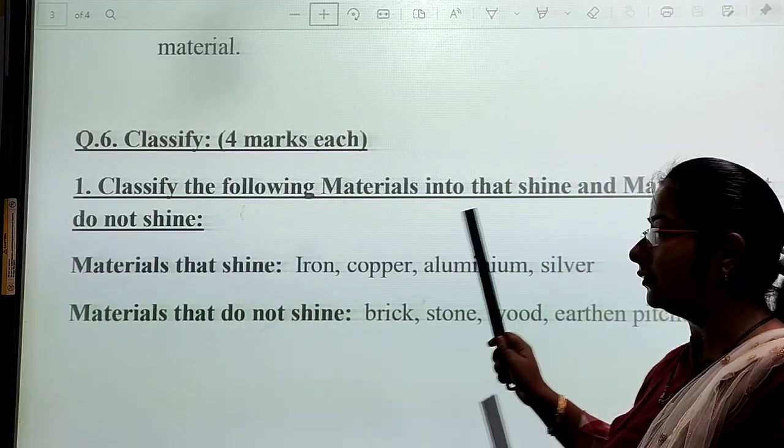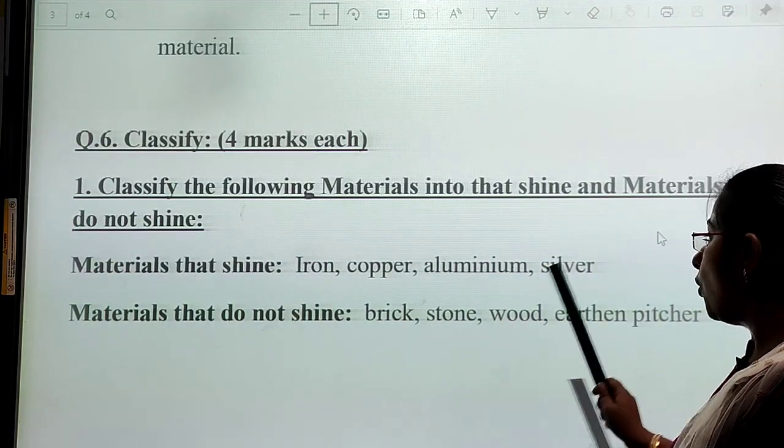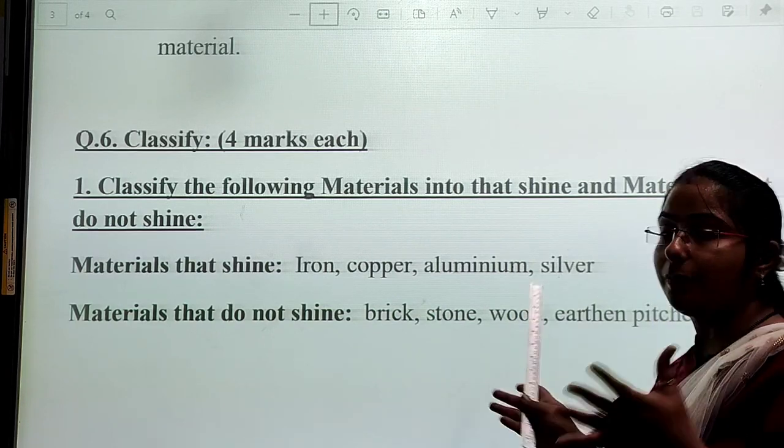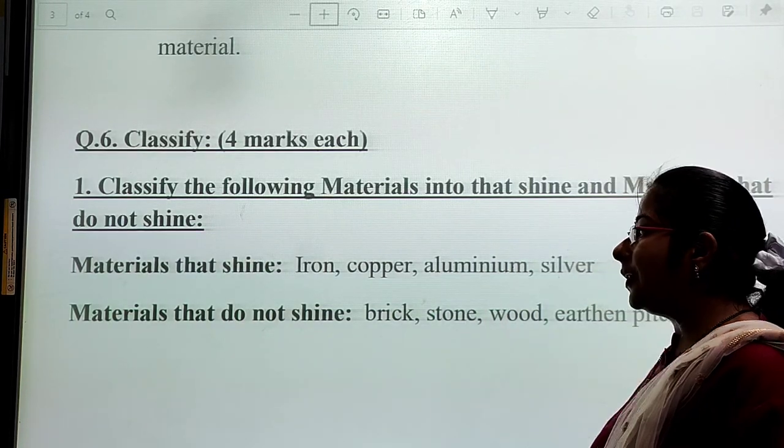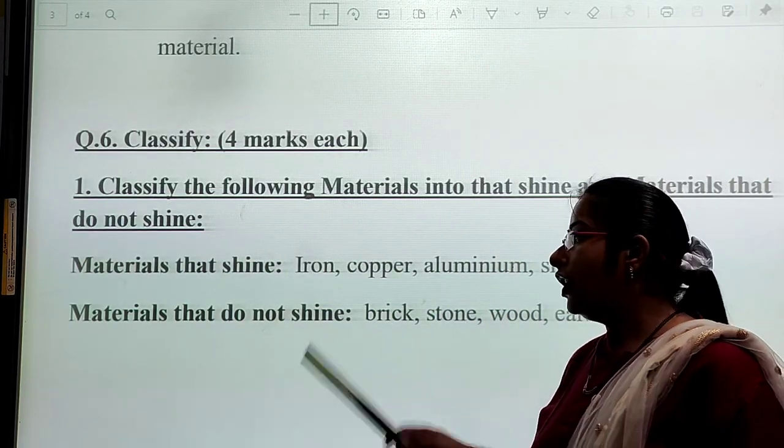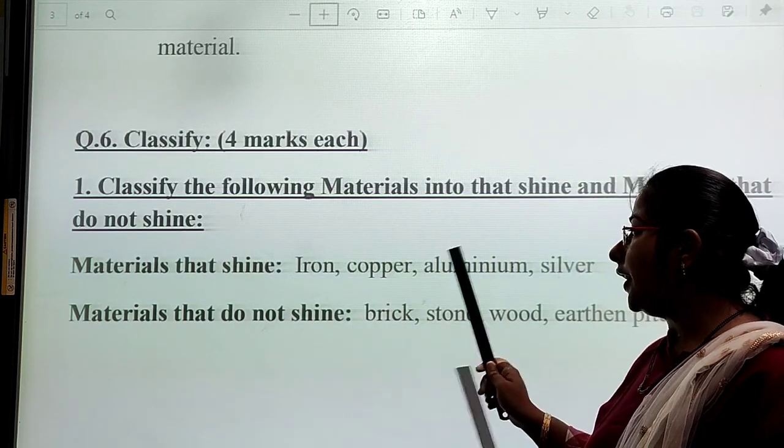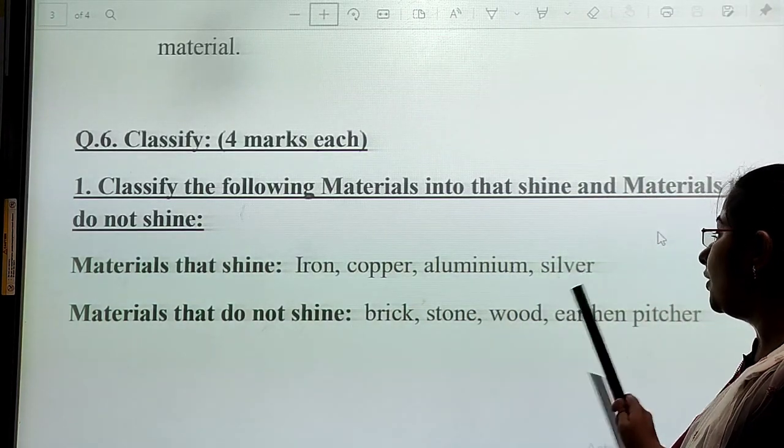Materials that do not shine: brick, stone, wood, and other materials. These are examples that do not shine.